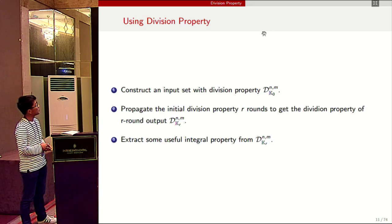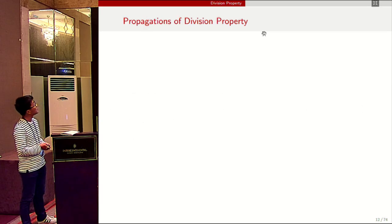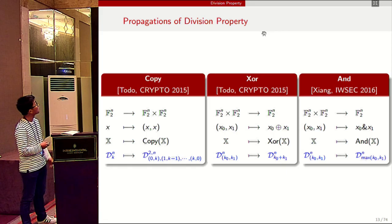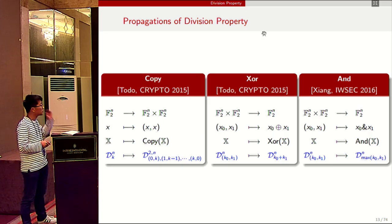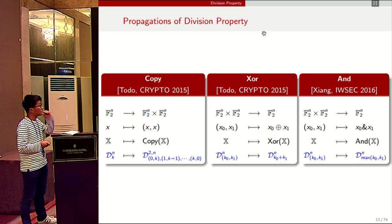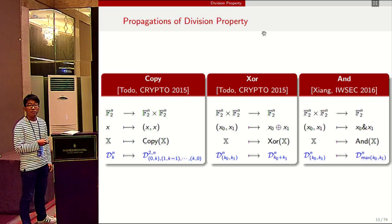In order to use division property, we need to know the propagation rules. We show some propagation rules for division property. For the copy operation, the division property propagation decomposes the k value into all possible combinations. For the XOR operation, the division property propagation adds the two coordinates of the input division property.